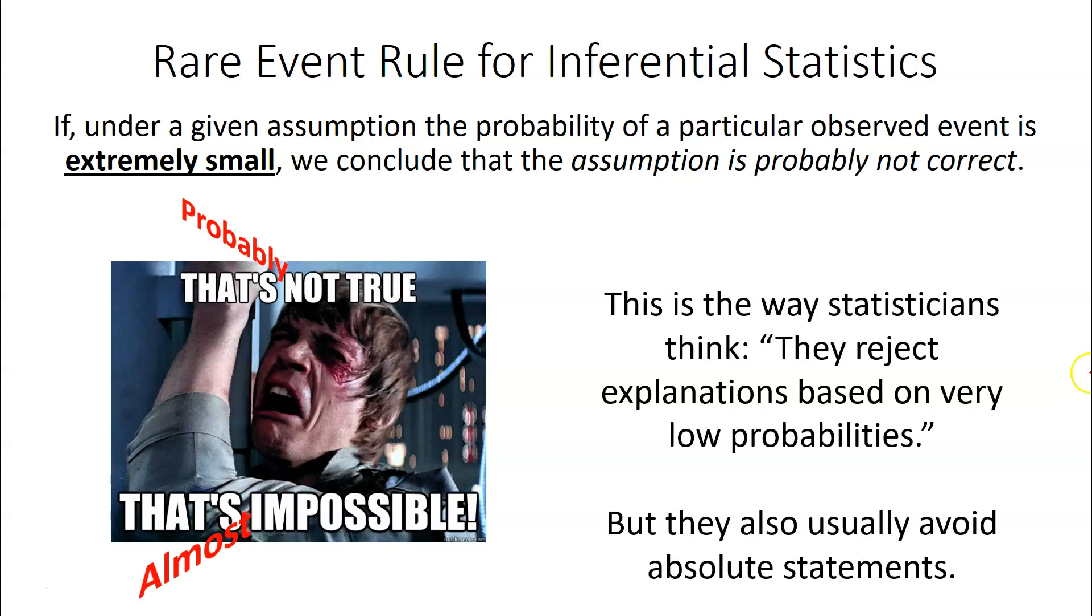When statisticians think about this, they tend to reject explanations based off of very low probabilities. But they also avoid using absolute statements, like Luke Skywalker here saying that's not true, that's impossible. Well, a statistician would say it's probably not true, and it's almost impossible because they don't like using absolute statements. There are absolute statements in statistics and in probability. Just typically, people avoid using them.